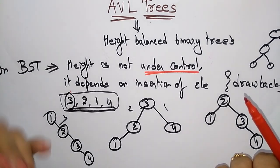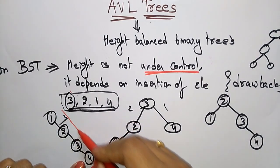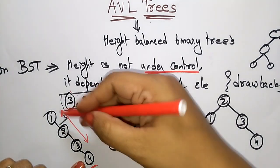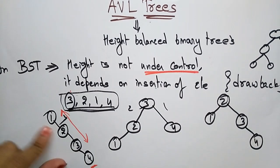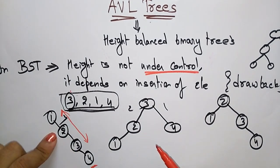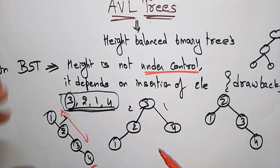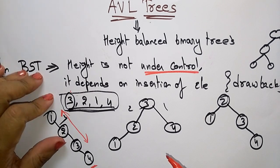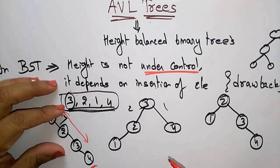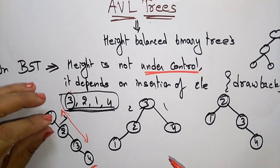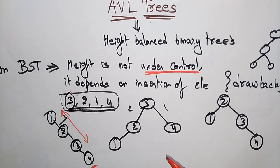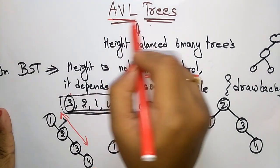Whenever the height increases, the time it takes to search an element also increases. If you want to search an element you need to do multiple searching transactions, so the searching time increases. That is the main drawback of the binary search tree.